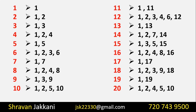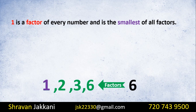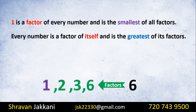If you have 1 to 20, you will write the factors. So: 1 is the factor of every number and it is the smallest of all factors. Every number is a factor of itself and it is the greatest of its factors.